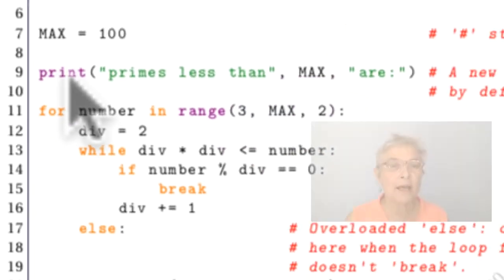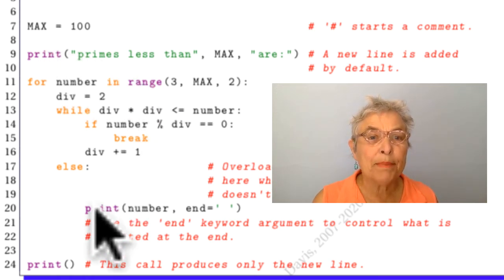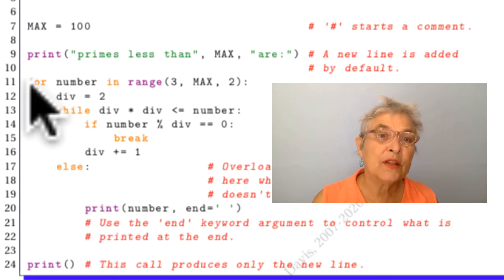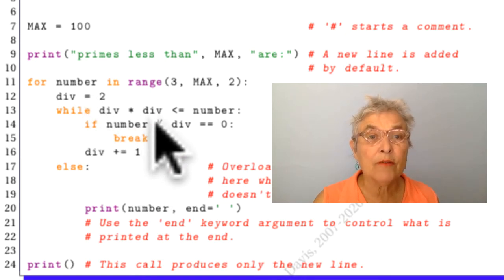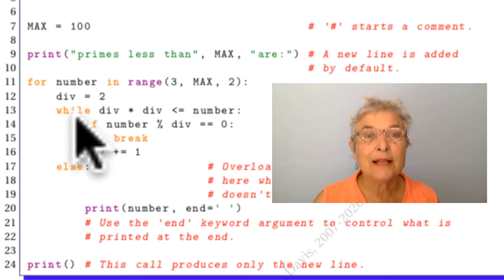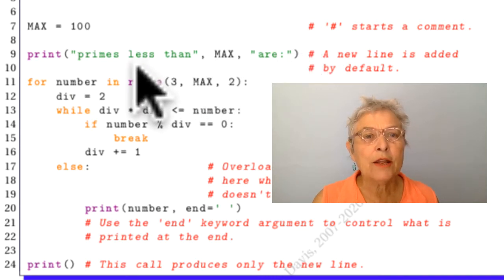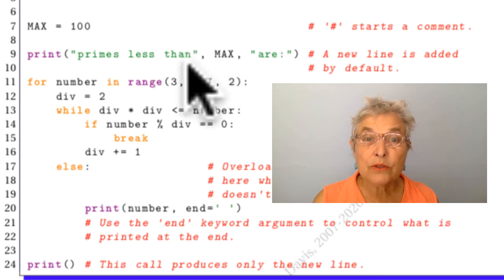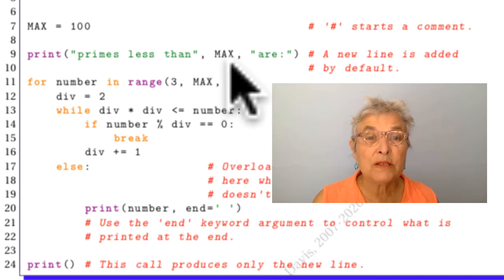Moving down to line nine, print. Look at that it's purple. Everything purple is a built-in. Everything kind of gold orange there, that's a keyword. So Python is made of built-ins and keywords and then anything else that you invent. But this print is very important to you. It is a function. We're going to call it with parens just like any language. And here are arguments. The string with the regular quotes, max, and another string with comma separation. These come out on standard out.